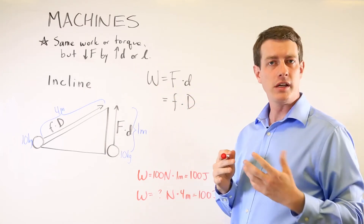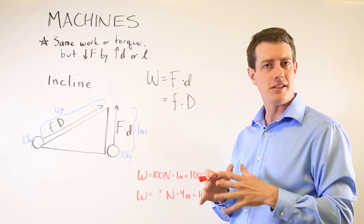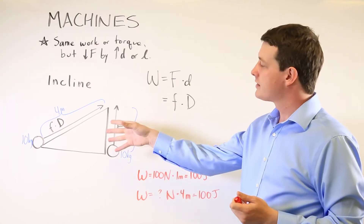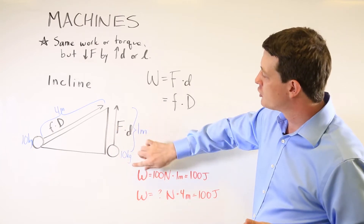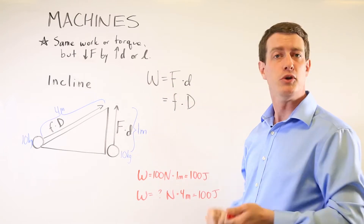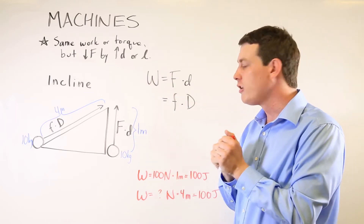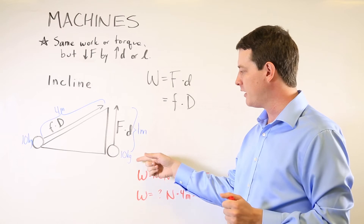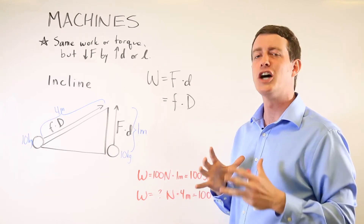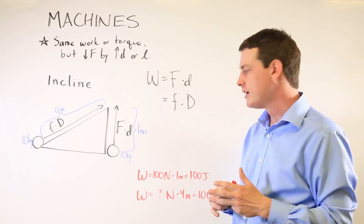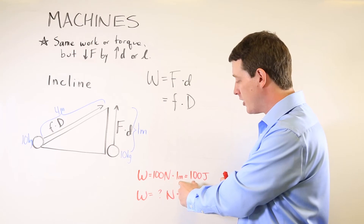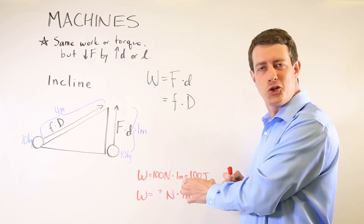By doing that we confer a mechanical advantage on the person trying to accomplish the work. Here's an example of an incline where you have a 10 kilogram object that you're trying to lift up one meter. You can do it with brute force by fighting all of the gravitational force — a 10 kilogram object means approximately 100 newtons, so you're using 100 newtons times one meter to accomplish 100 joules of work.